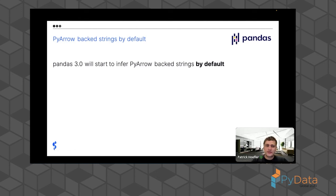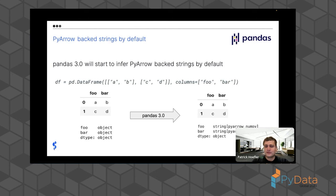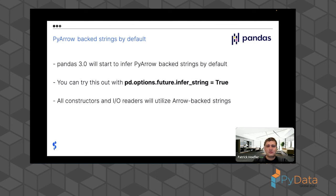The big discrepancy between numpy object and PyArrow-backed strings is one of the reasons we will start inferring strings as PyArrow-backed by default in pandas 3.0, which will hopefully be released in Q2 2024. This means a dataframe with string columns that would previously be inferred as object — which is very memory-intensive and not very fast — will just flip a switch and be inferred as PyArrow-backed. The string data type is modeled after numpy object so behavior should be similar, but memory footprint will be significantly lower and it will hopefully also be a lot faster.